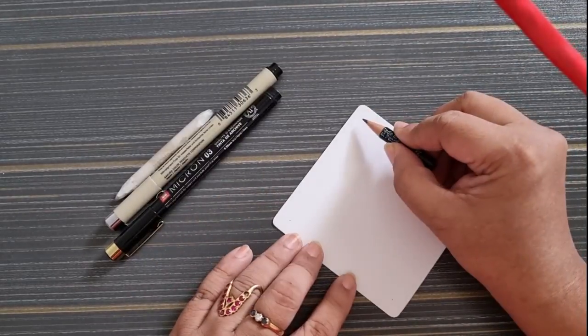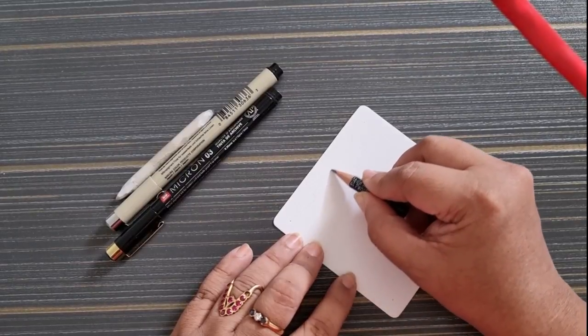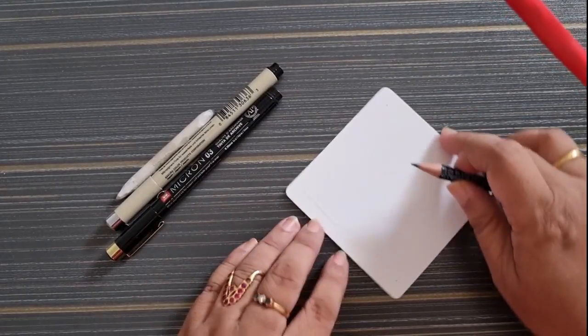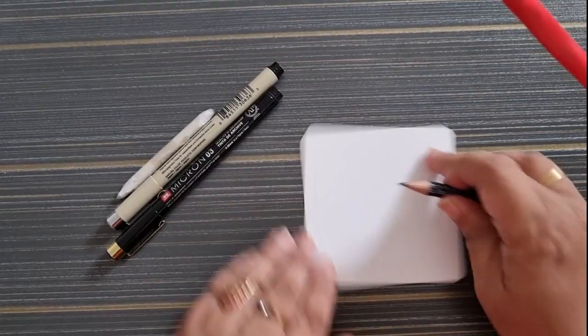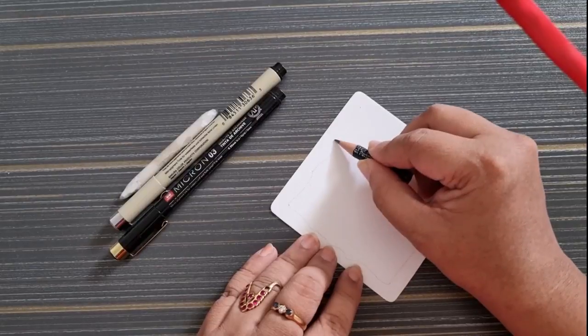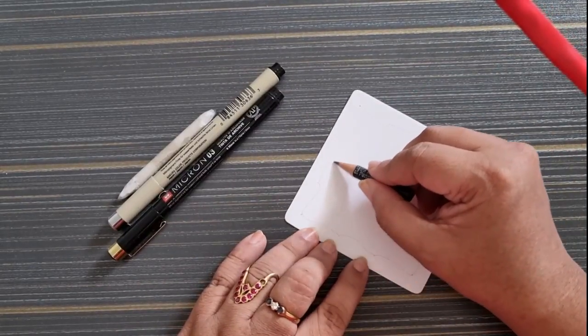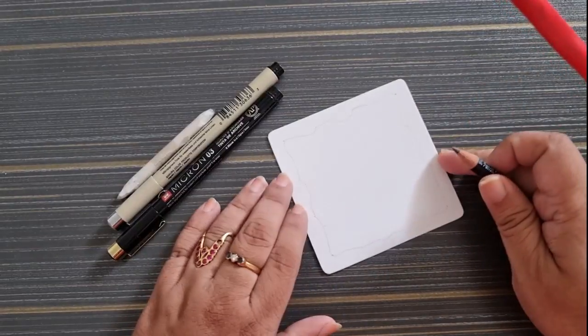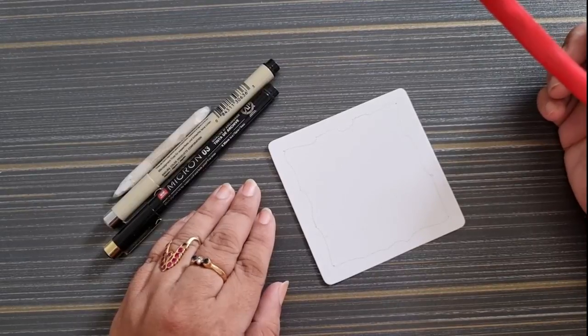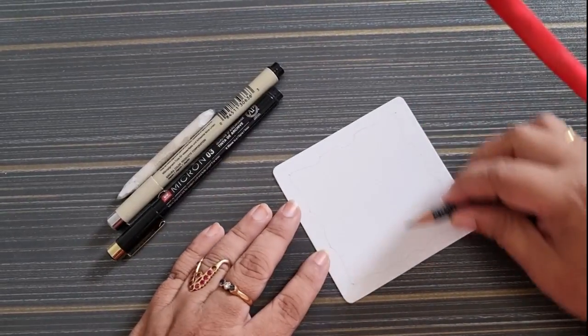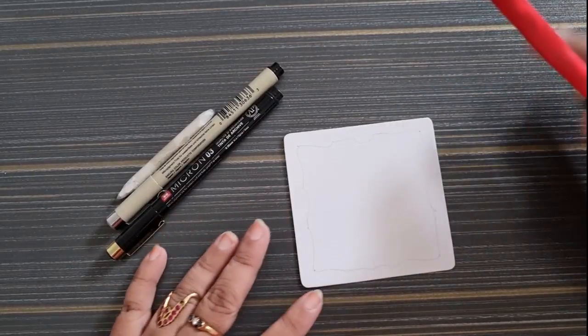I'm going to start with four dots, the traditional way of starting a Zentangle art. Then I'm going to connect with a random line. You can see I'm deliberately keeping my lines crooked, which gives a nice fun and interesting look. I'm going to use the whole tile for today's tangle.